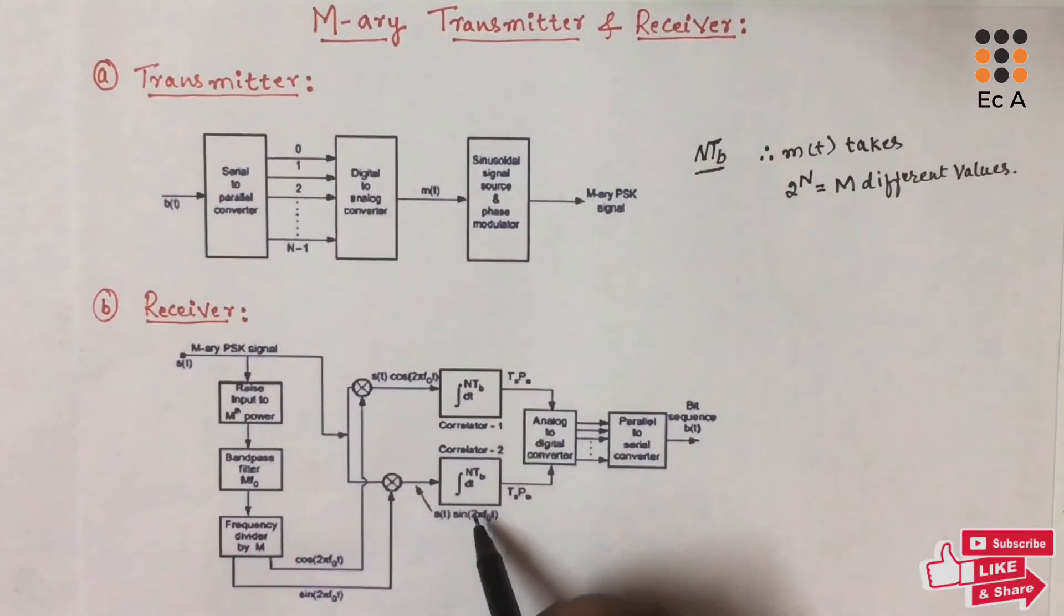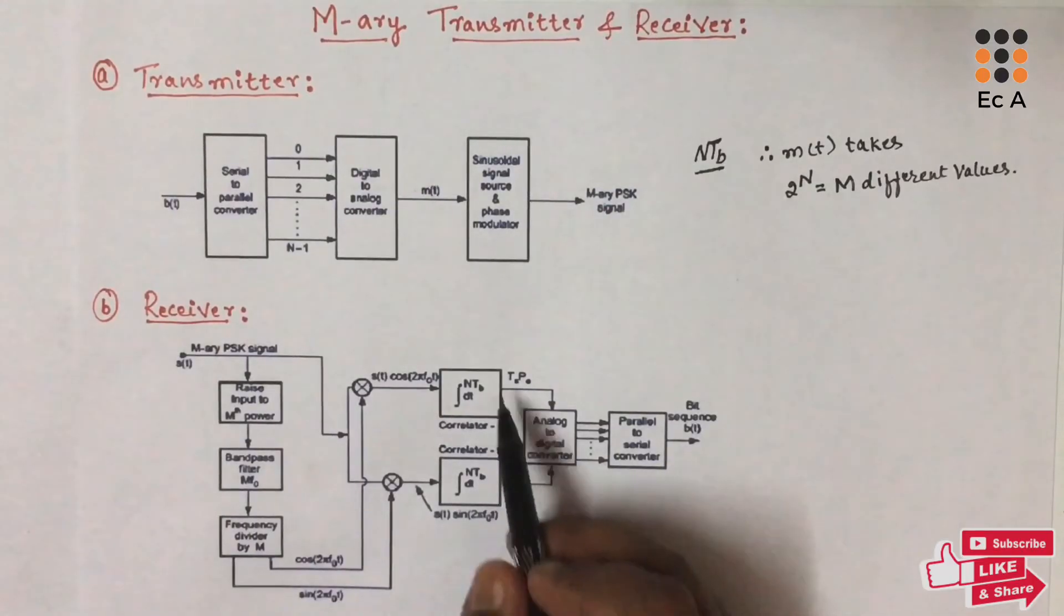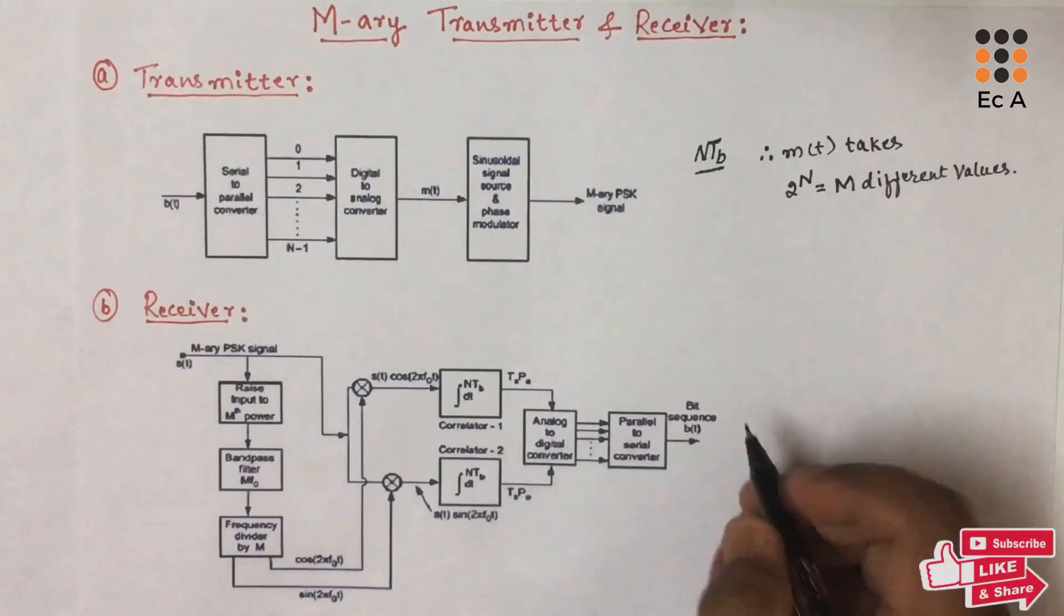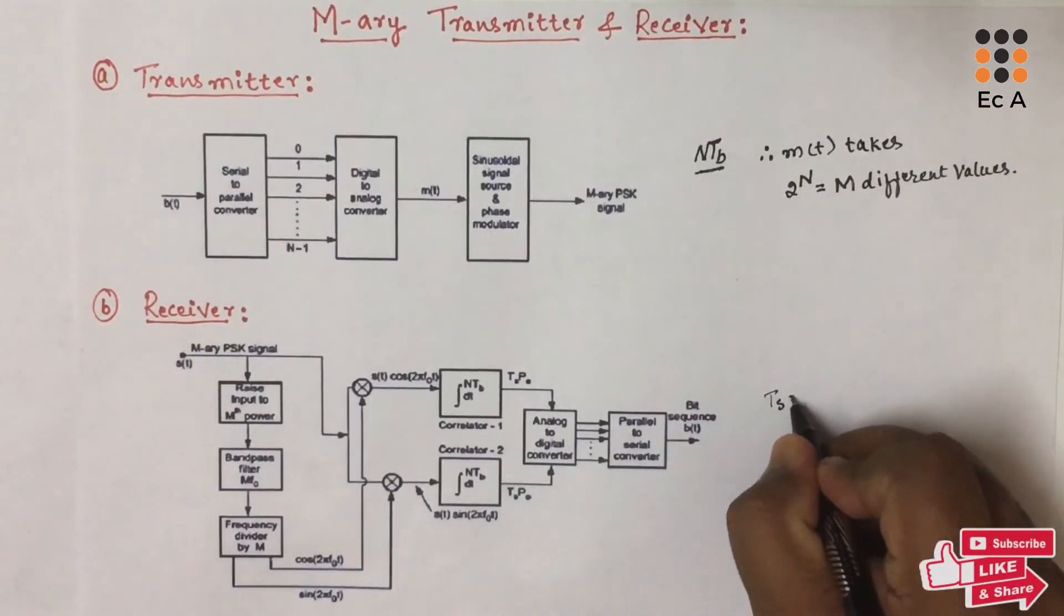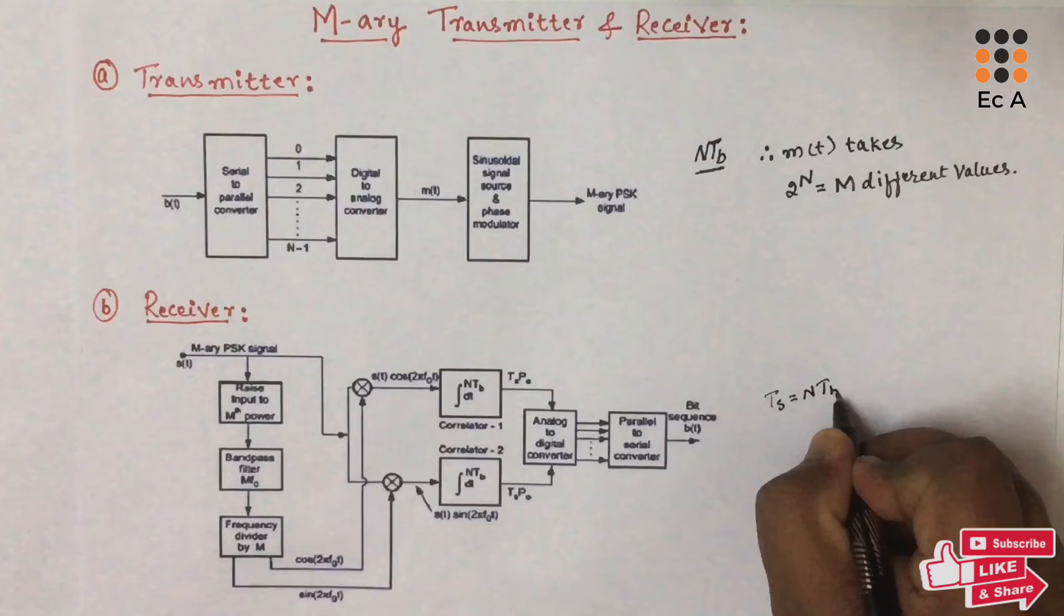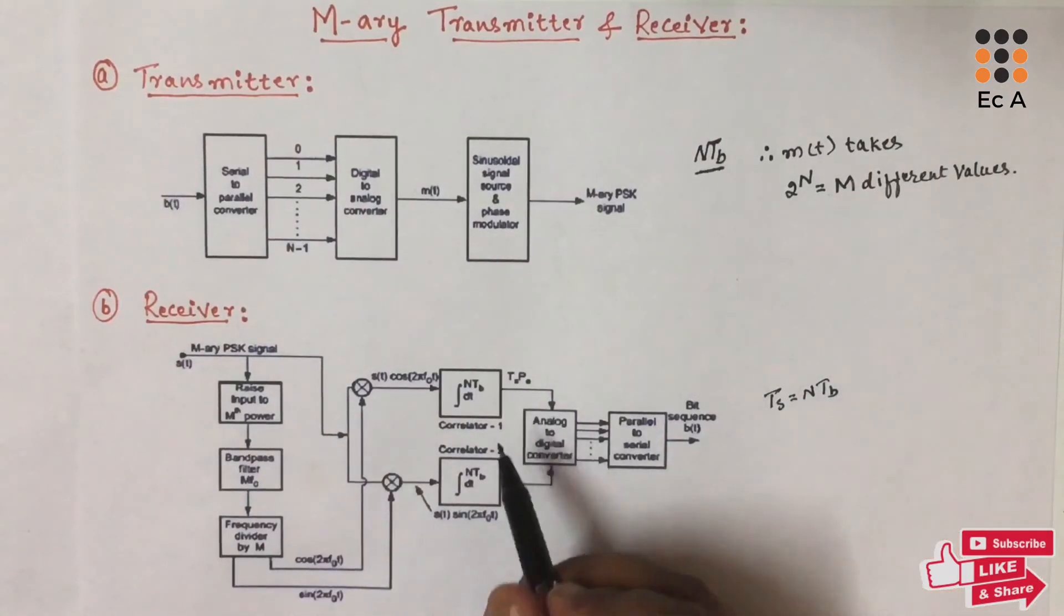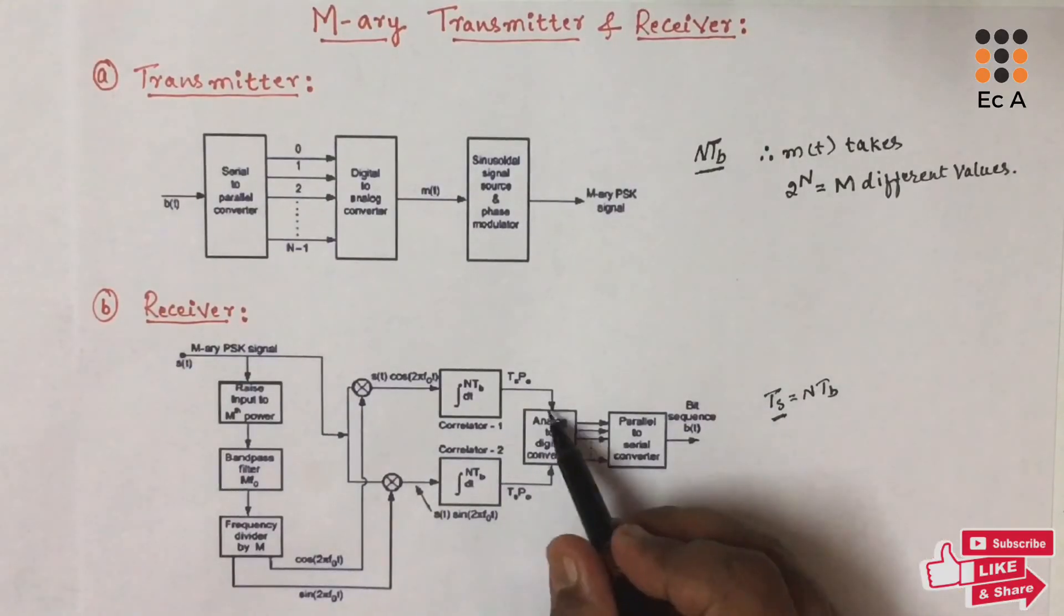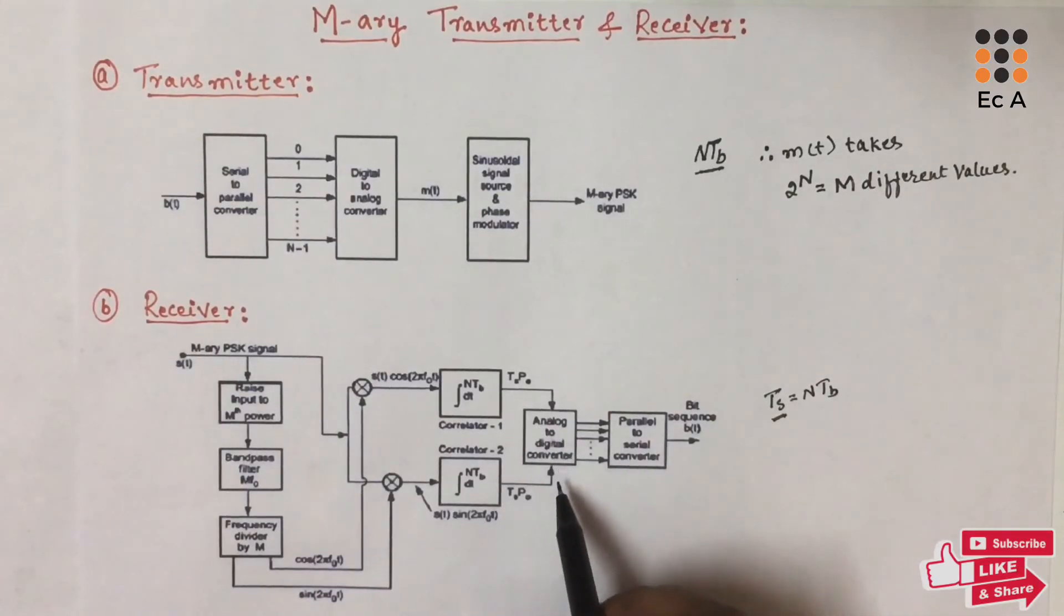The output of multipliers are given to the integrator. The integrator integrates the signal over the period TS equal to nTB. The output of the integrator are sampled after period TS and applied to analog to digital converters. The analog to digital converter reconstructs n-bit symbols.